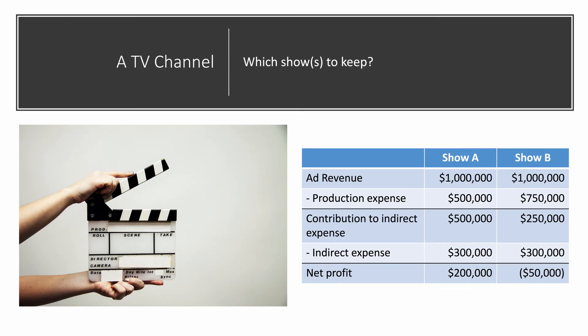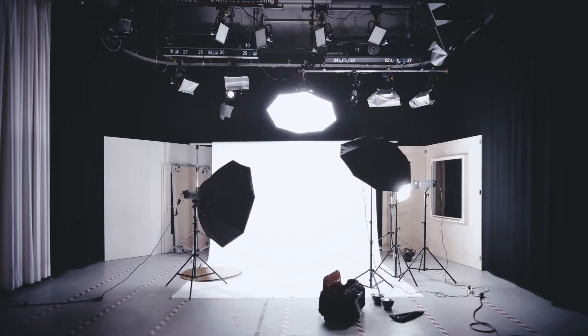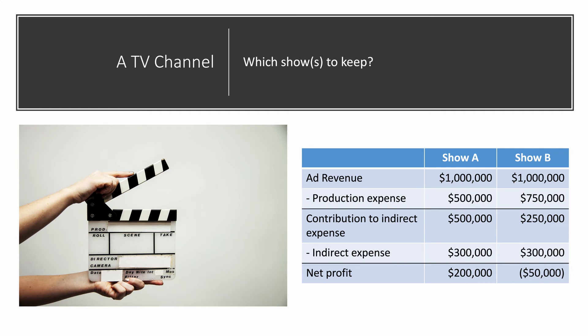Here is a similar example involving TV shows. A TV channel has two different shows, and both shows, as you see in the table, have the same ad revenue of $1 million. But their production expenses are different: $500,000 and $750,000. Therefore, the contributions to indirect expenses are different: $500,000 and $250,000. The indirect expenses — such as utilities, buildings, and equipment — are not directly associated with individual shows and are distributed equally at $300,000 each. As a result, Show A has a net profit of $200,000 and Show B has a net loss of $50,000.